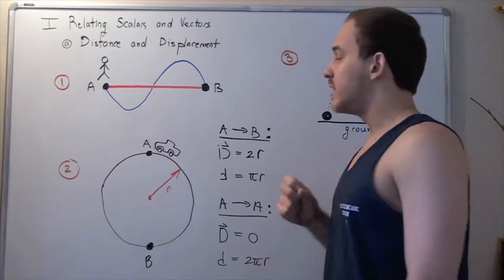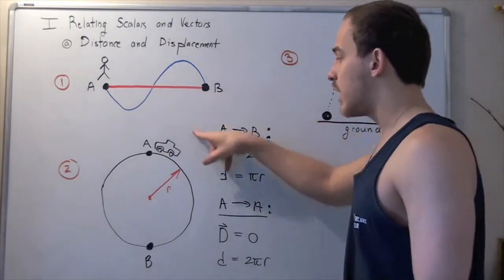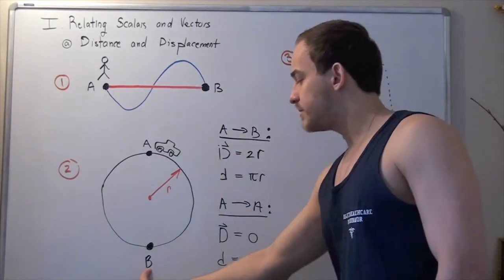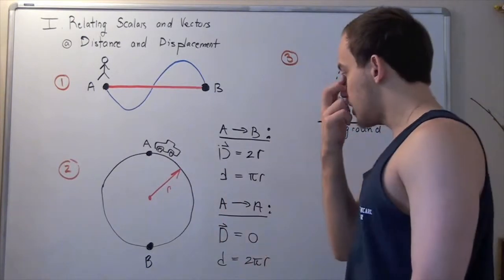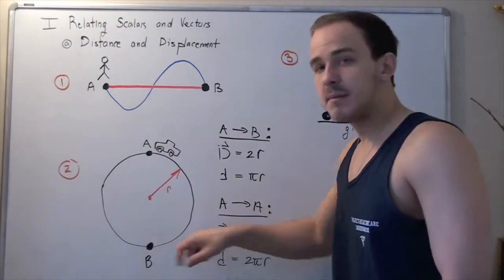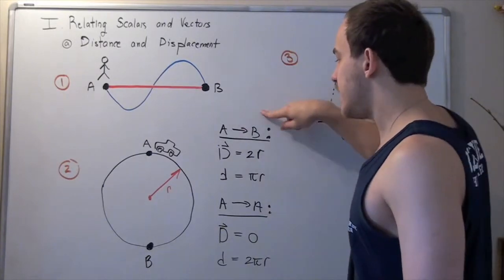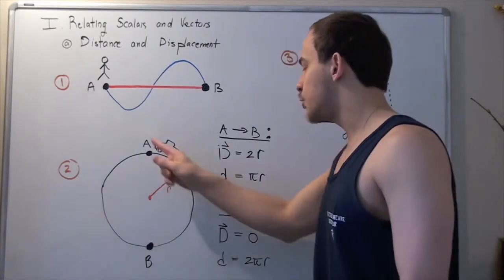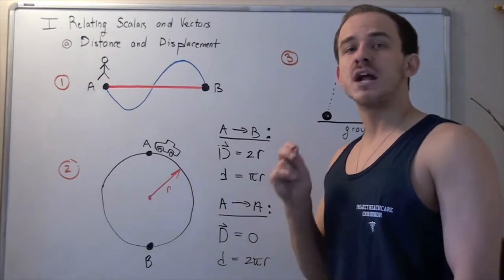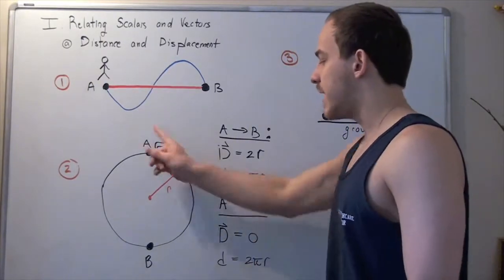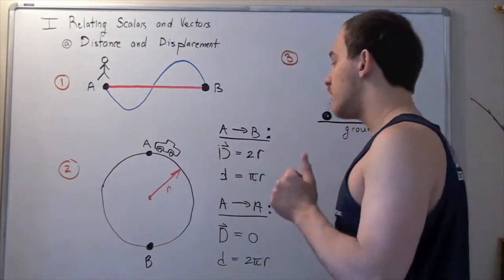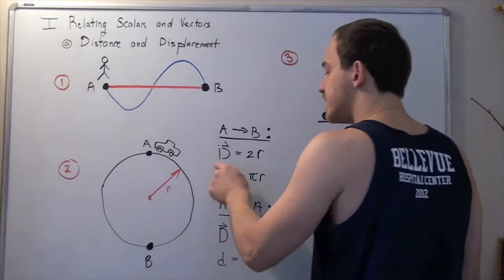Now let's look at example two. Suppose a person gets in a car and travels along a circular pathway with radius R, from point A to point B along a semicircle. The distance is the actual pathway taken — going from A to B along the semicircle — so we divide the circumference by two to get pi R. The displacement is a vector representing the most direct pathway from A to B, which is simply the diameter: 2R.